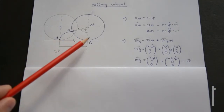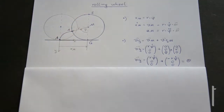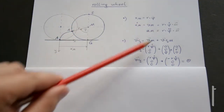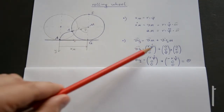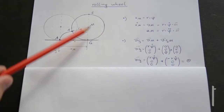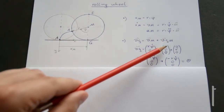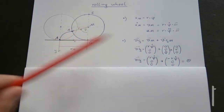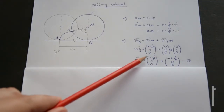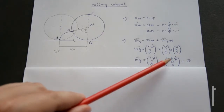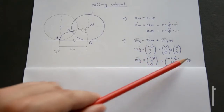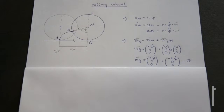Now we are interested in the velocity of the contact point G. We write the kinematic connection: vG = vM + vGM, which is r·phi_dot in x plus omega cross r_GM. Omega is (0, 0, phi_dot) and r_GM goes in the positive y-direction by R. After calculation, the two terms cancel, giving vG = 0. For pure rolling, the contact point to the ground has no velocity.